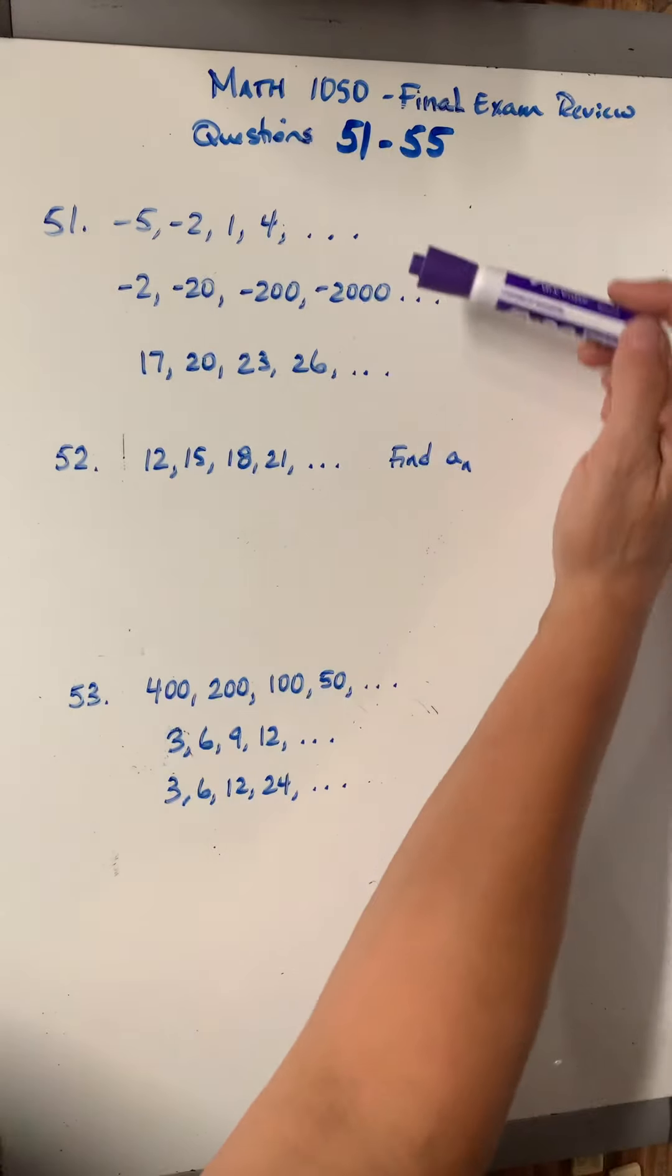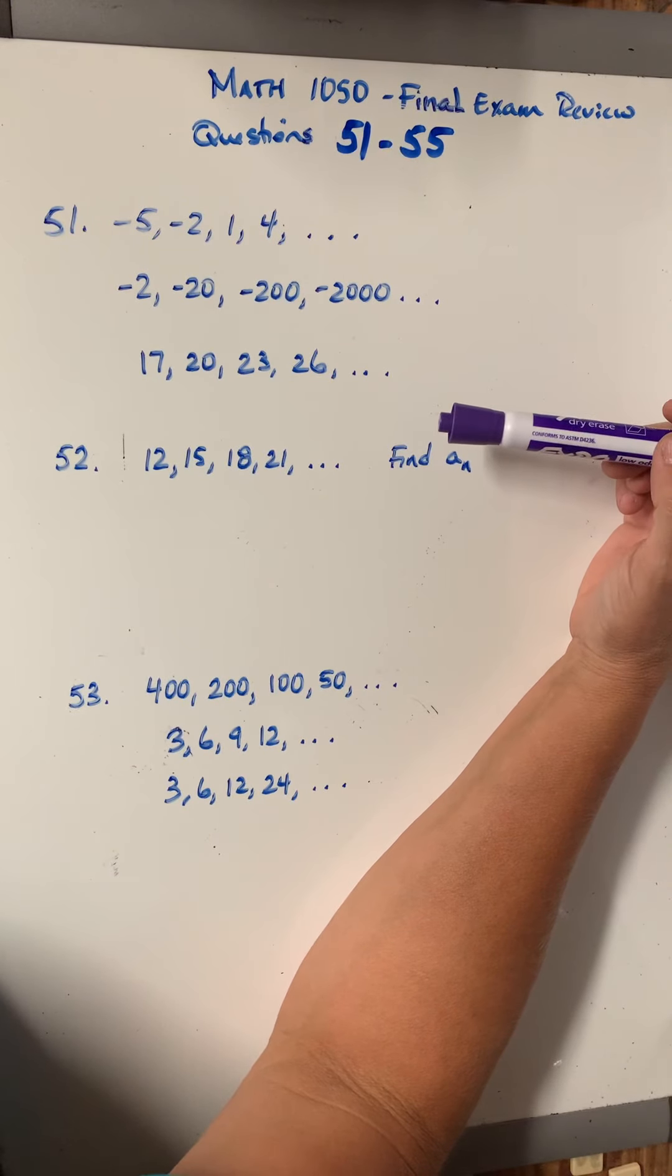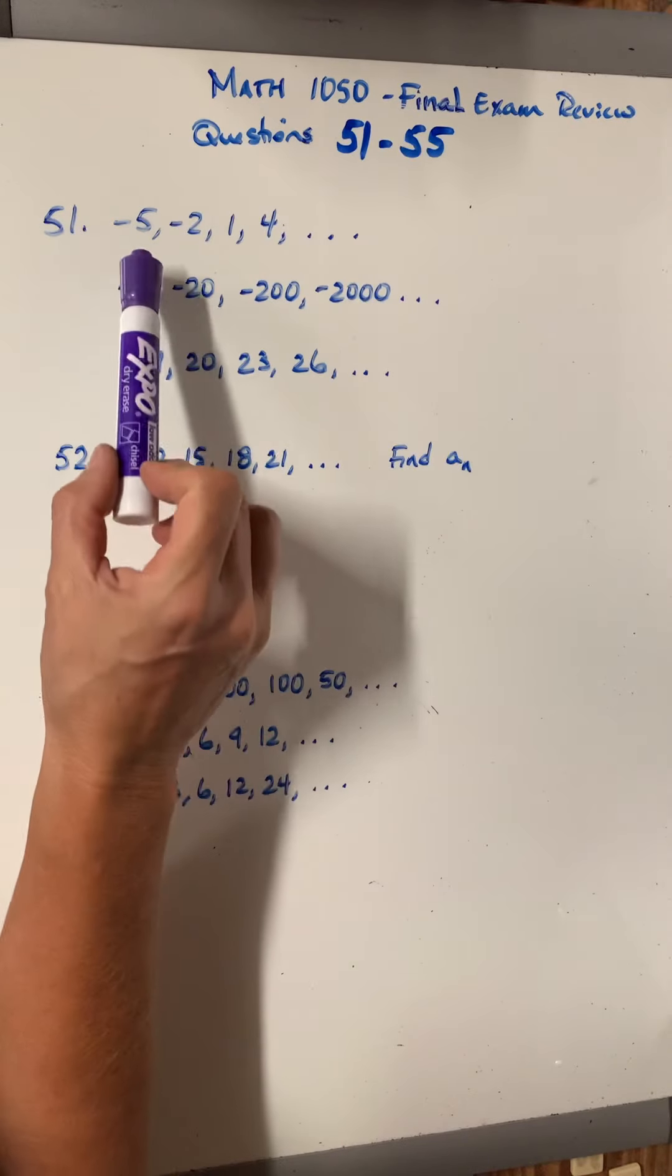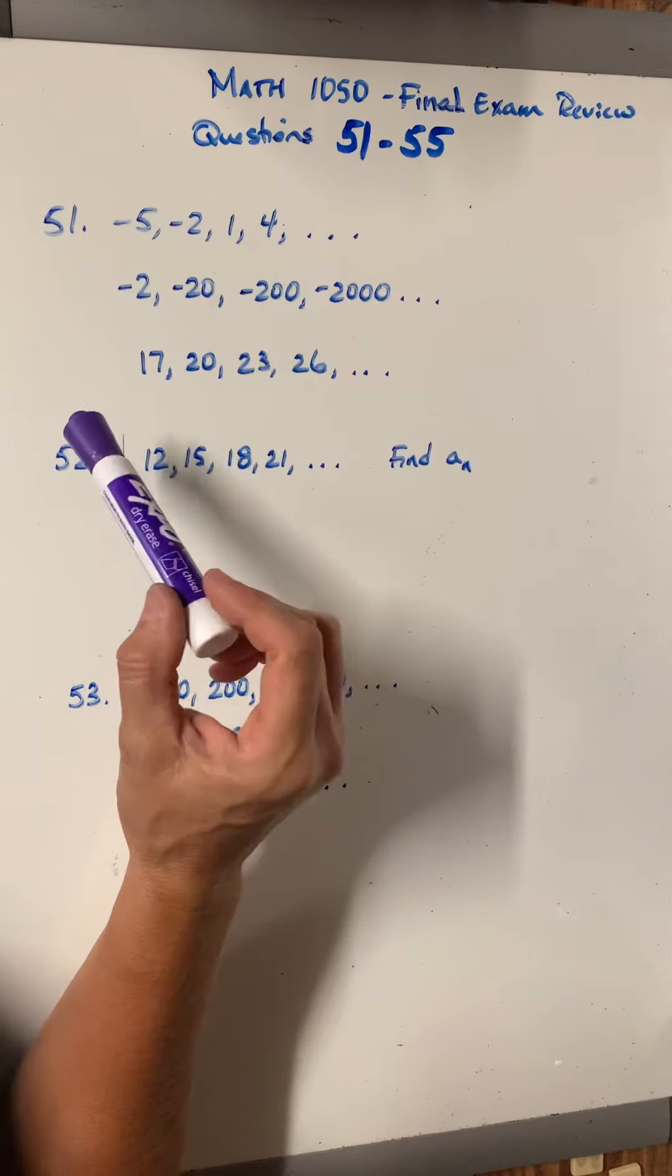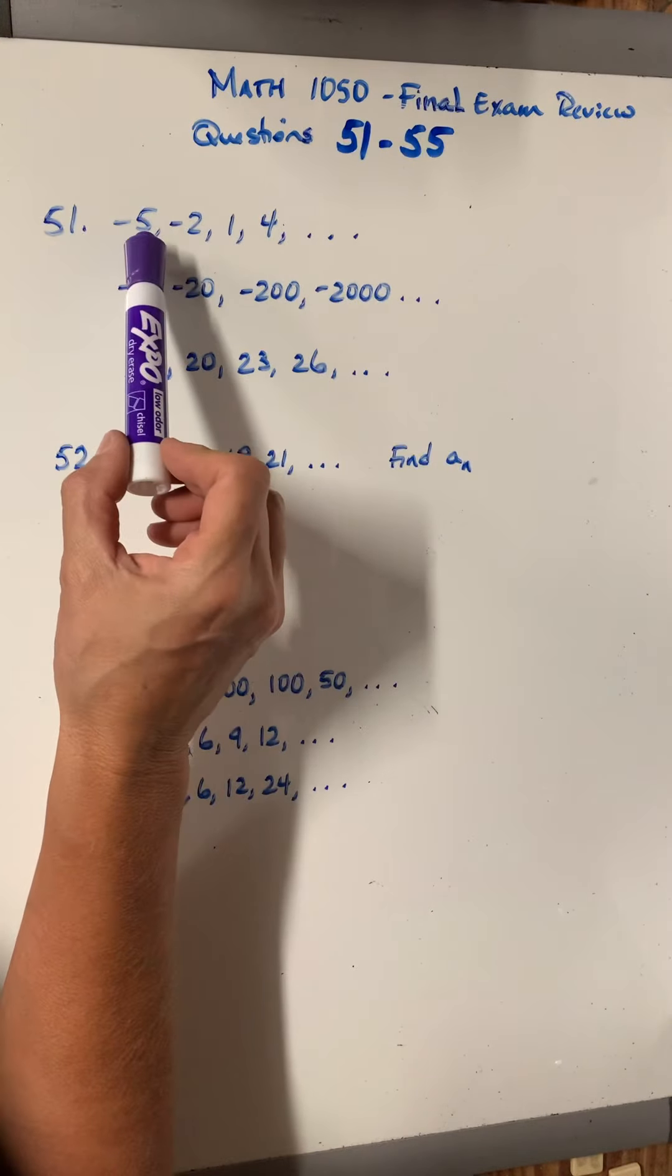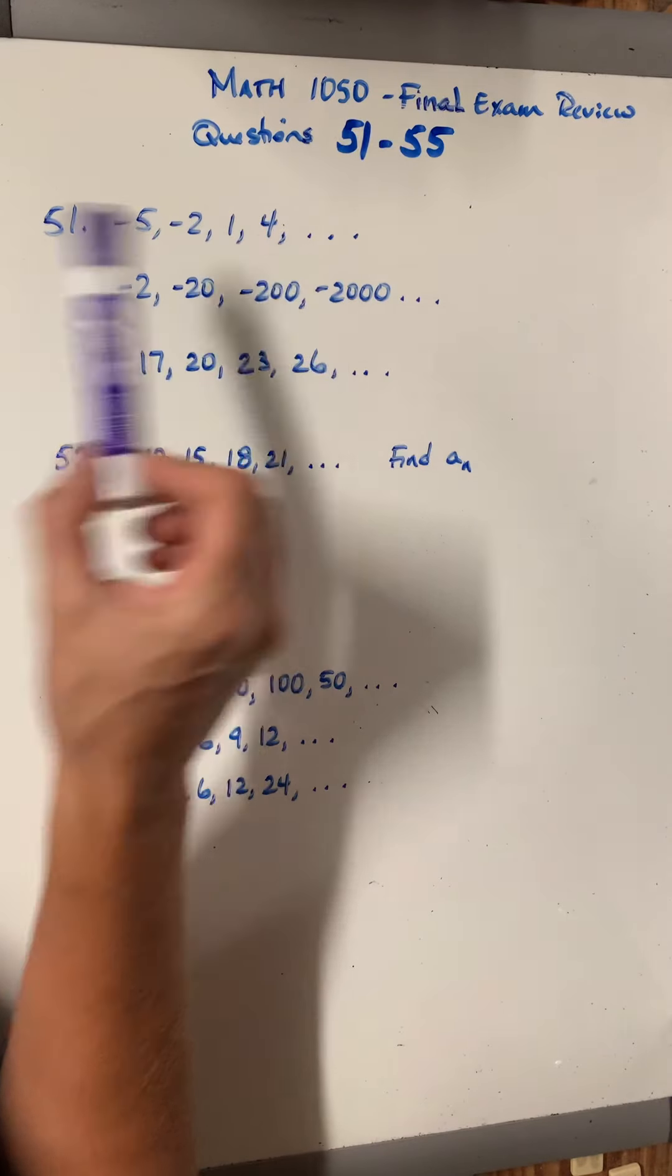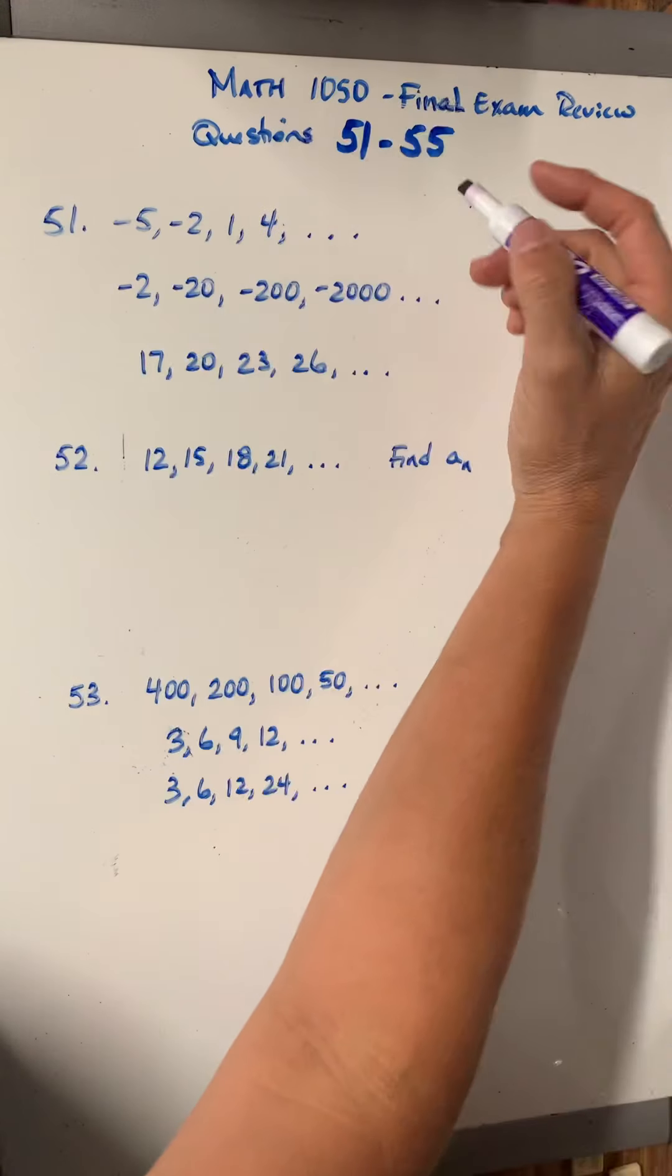So 51 gives us three sequences and wants us to tell them whether or not they are arithmetic sequences. In order for it to be arithmetic, then it means that the distance from one number to the next has to be the same each time. So if I add 3, I get the negative 2. If I add 3, I get 1. If I add 3, I get 4. So this is arithmetic because each time I'm increasing by 3.